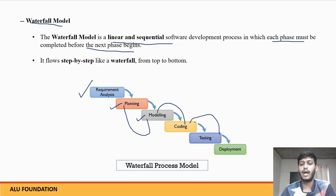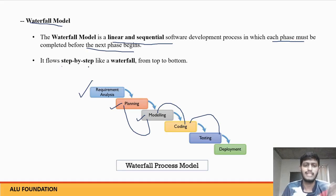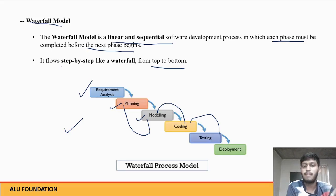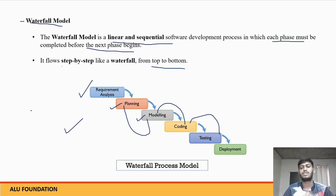We will not go to testing until coding is complete — until that phase is complete we will not go to the next phase. This is the waterfall model. It flows step by step: requirement analysis completed, then planning completed, then modeling completed, then coding — like a waterfall from top to bottom. Until one phase is complete, we do not go to the next phase; if there is a problem we have to go back.